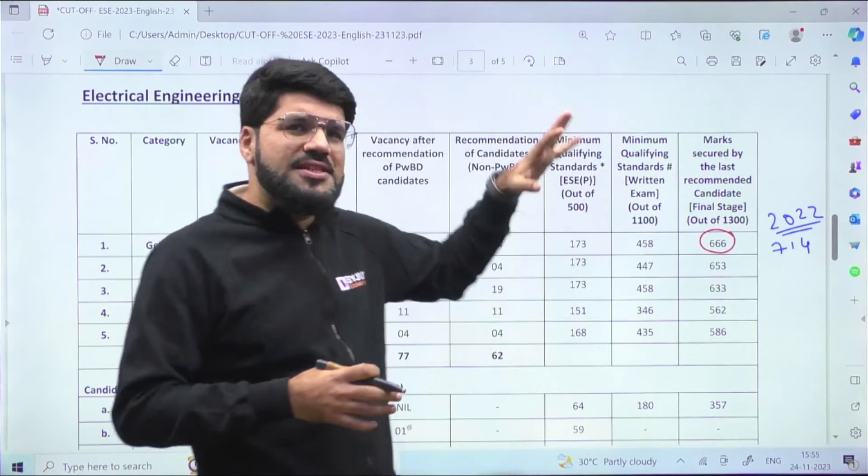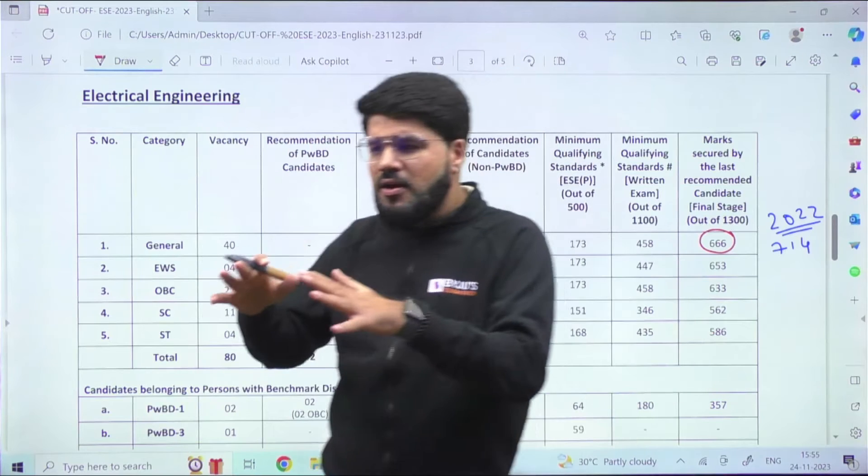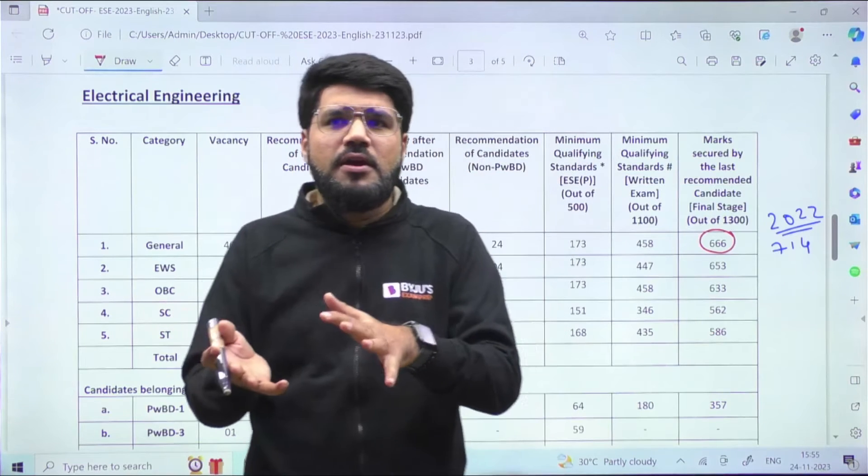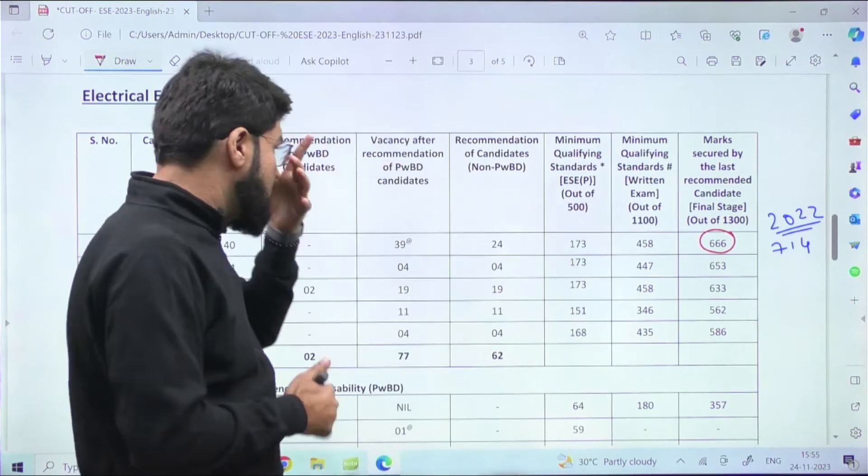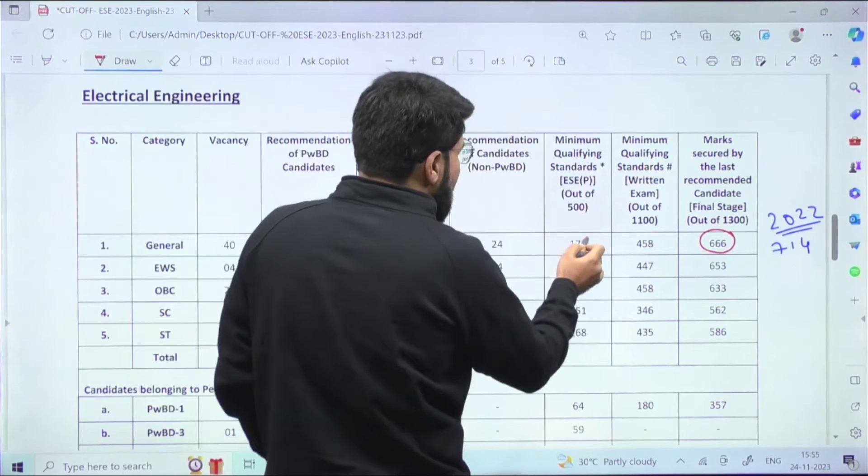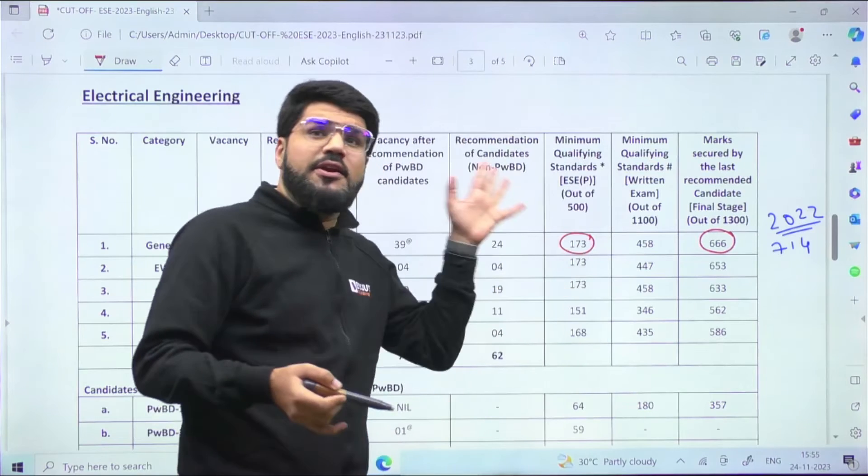That's why the cutoffs are not only this year, but around 50-60 percent means you're almost qualified. Going beyond 60 percent, you'll be towards the topper zone. For Electrical, the prelims cutoff has been 173, which is also on the lower side.